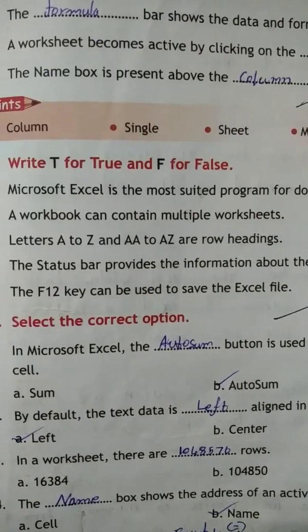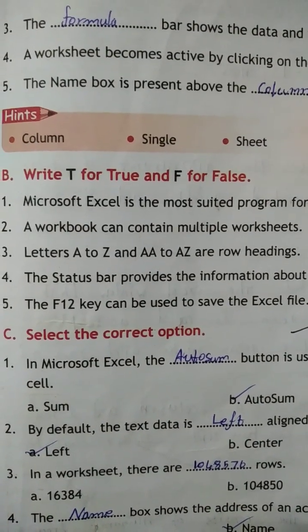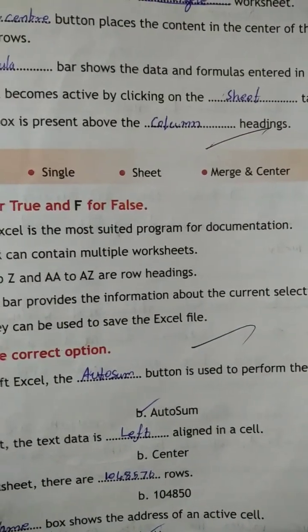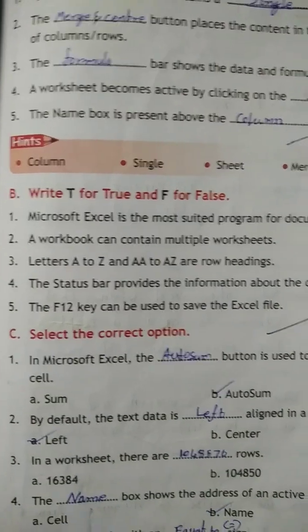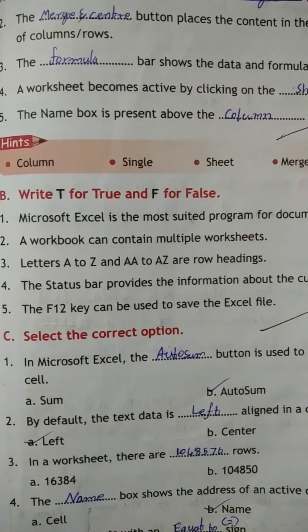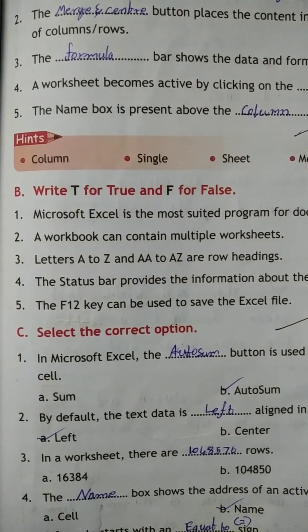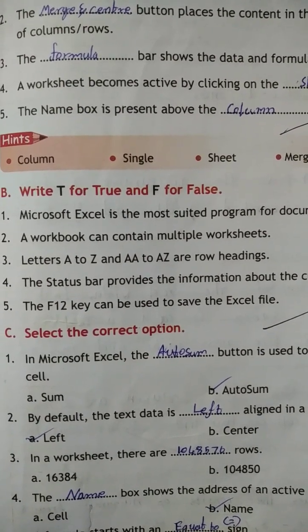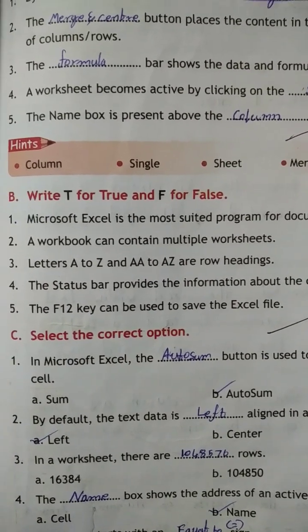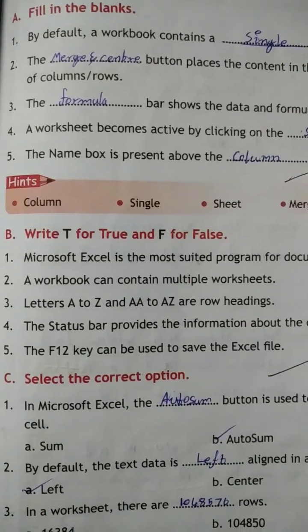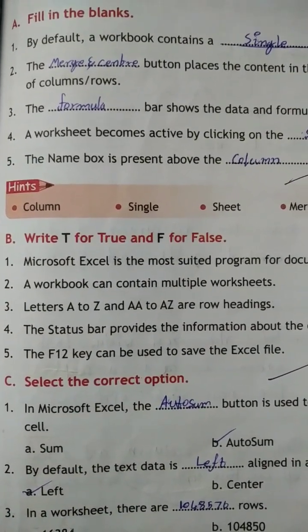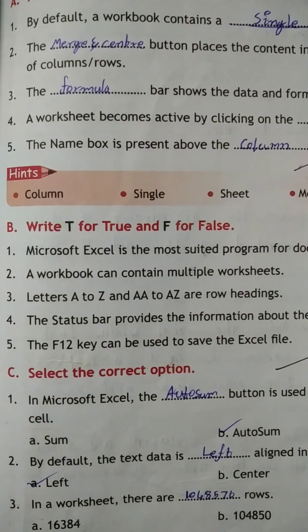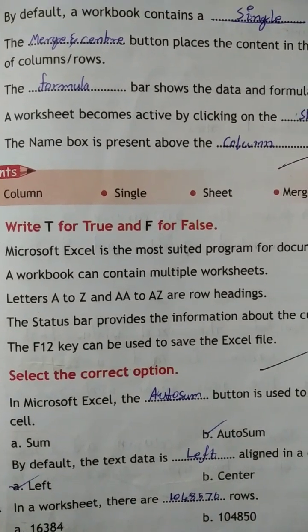True or False: Microsoft Word is the most important program for documentation — True. A workbook can contain multiple worksheets — True. Letters A to Z are row headings — False. The status bar provides information about the current selection — True. The F12 key can be used to save an Excel file — True.